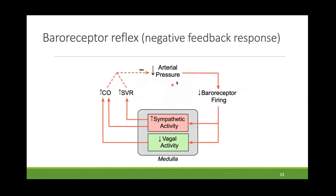If you have a sudden fall in arterial pressure — for example, going from lying down to suddenly standing up — cardiac output falls, mean arterial pressure falls, and baroreceptor firing in the carotid sinus decreases. Through the NTS and medullary centers, this leads to sympathetic activation and vagal inhibition. Together, these increase cardiac output and increase SVR, blunting the fall in pressure. Even though you stand up and pressure may transiently fall, after a short time it normalizes if everything is operating correctly.